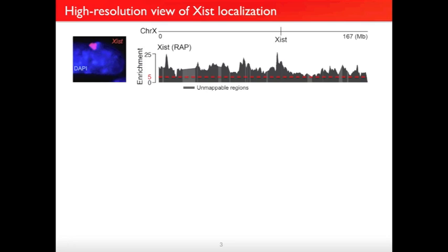We already knew XIST localized to the X chromosome, but the power of doing this by high-throughput sequencing is that we can figure out exactly where on the X chromosome it binds — we can zoom in on this cloud. Across the entire 167 megabases of the X chromosome, enrichment of DNA sequencing reads in the XIST purification versus control is on the y-axis. XIST seems to bind everywhere — more than five-fold enriched across the entire chromosome — not to specific motifs, but broadly. At the same time, there's variation in the precise level of enrichment, and we wondered what that represented.